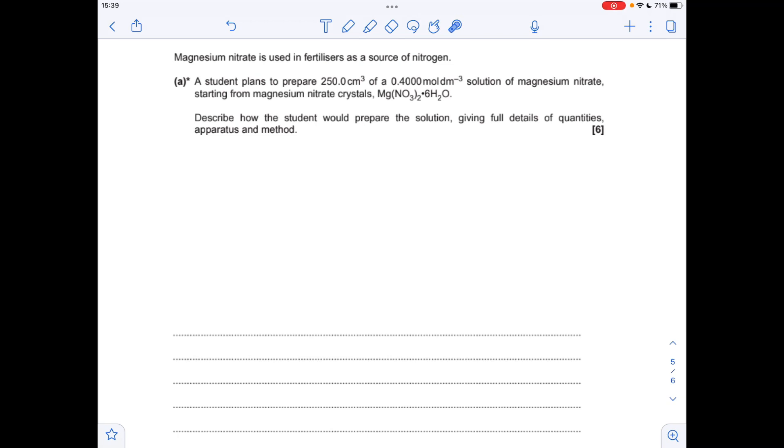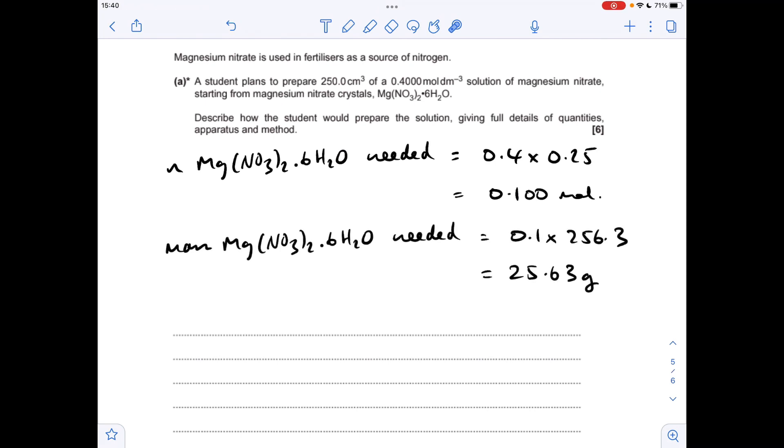The first thing we'll do is get the moles from concentration times volume. Remember the volume's got to be in decimeters cubed, so that's coming out at 0.1 moles. Now we just need to work out the mass by multiplying the moles by the MR of that. The MR was 256.3, so we need 25.63 grams.